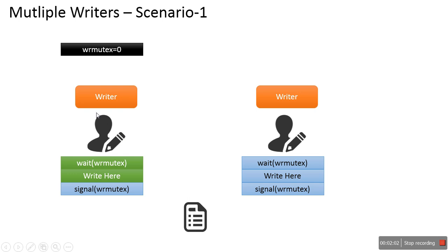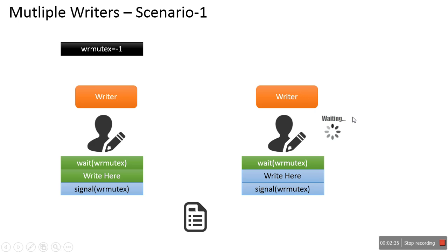Now Writer2 also starts executing its code. It calls wait(wr_mutex), which decreases the value again — now it becomes -1. Since this wait function finds the value is less than 0 after decrement, execution is stuck at that instruction. Writer2 starts waiting. It will wait for this value to become non-negative, so as soon as this value becomes 0 or more, the waiting will be over.